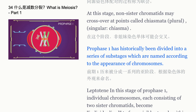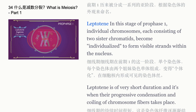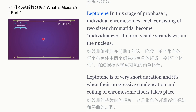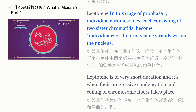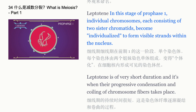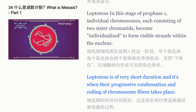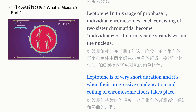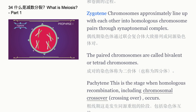Prophase 1 has historically been divided into a series of sub-stages named according to the appearance of chromosomes. Leptotene: in this stage, individual chromosomes, each consisting of two sister chromatids, become individualized to form visible strands within the nucleus. Leptotene is of very short duration and is when the progressive condensation and coiling of chromosome fibers takes place.